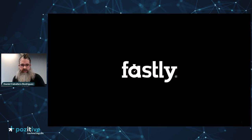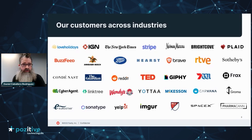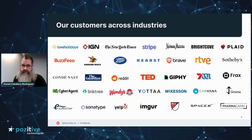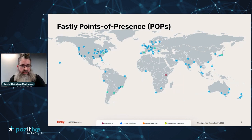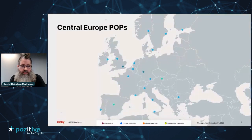Fastly is doing our best to improve internet users' experience from a performance perspective but also from a security standpoint. There are many companies already trusting us to deliver their content, streams, and web pages to their end users. In order to do this, we have a relatively big network — today we have around 100 points of presence. A point of presence is like a data center with Fastly machines which helps our customers deliver their content, with POPs around the globe.